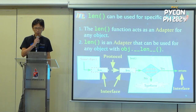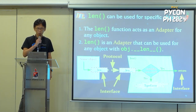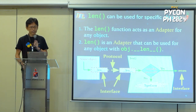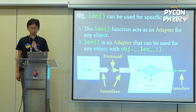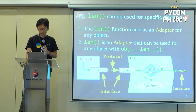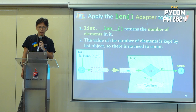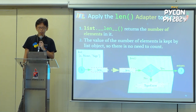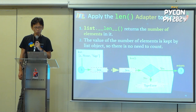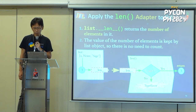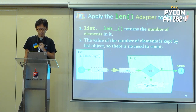The len function acts as an adapter for a specific object. Specifically, an object that adapts to the protocol of returning a numerical value through the `__len__` interface. If the len function receives a non-numeric type, it will raise a TypeError exception. Next question: apply the len adapter to a list. A list adapts to the len adapter. The list `__len__` method returns the number of elements.